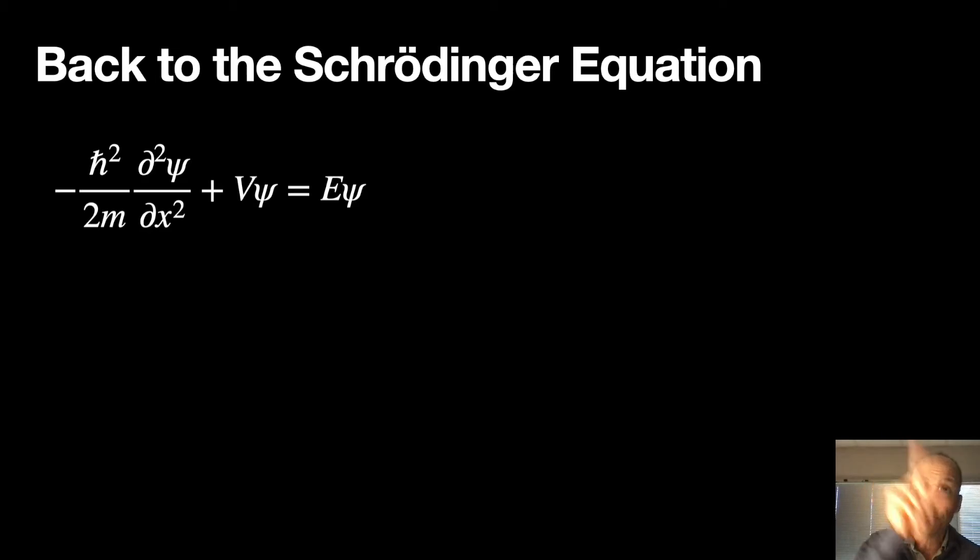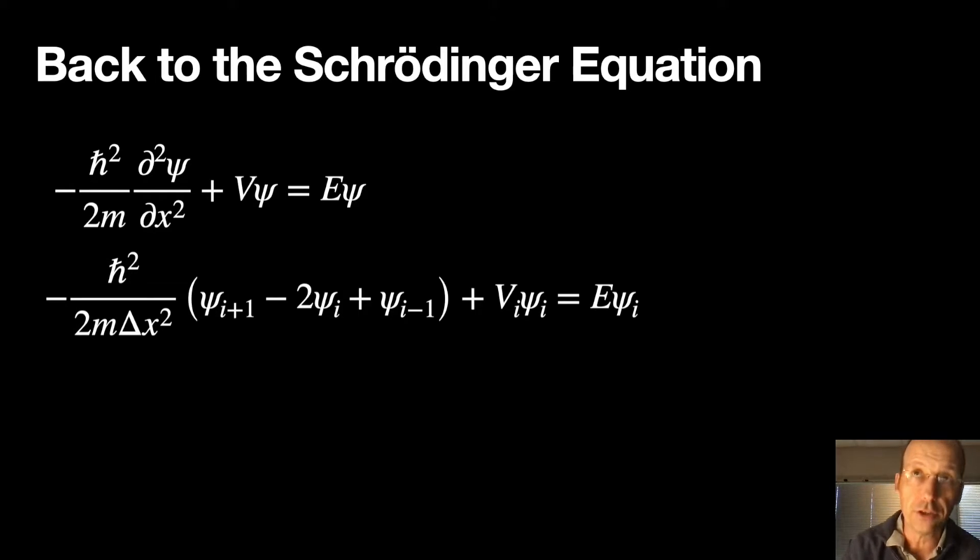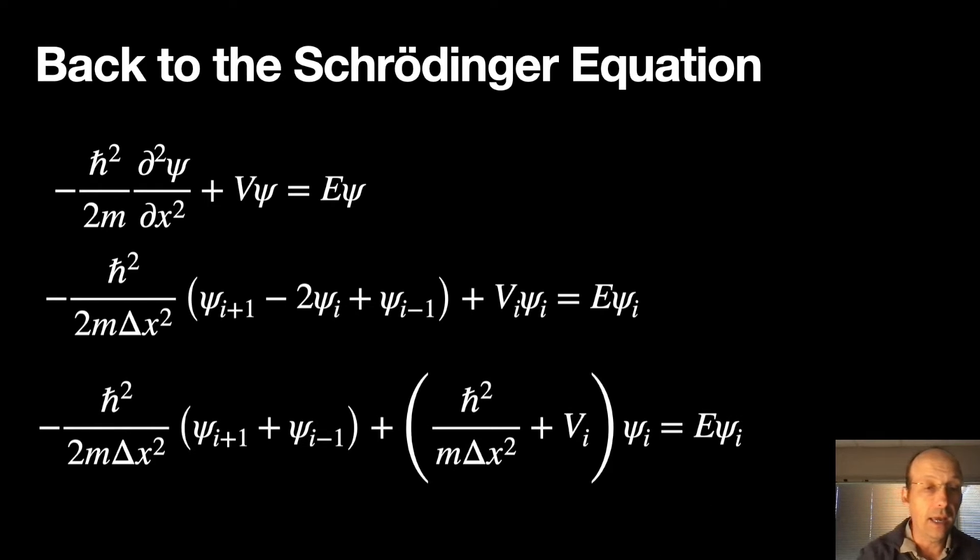Back to the Schrödinger equation, the space part. We have that. Now we can just put in our expression for the second derivative, and we get that. And if I just group things together, I can make it look like this. I'm going through this fast, like I said.